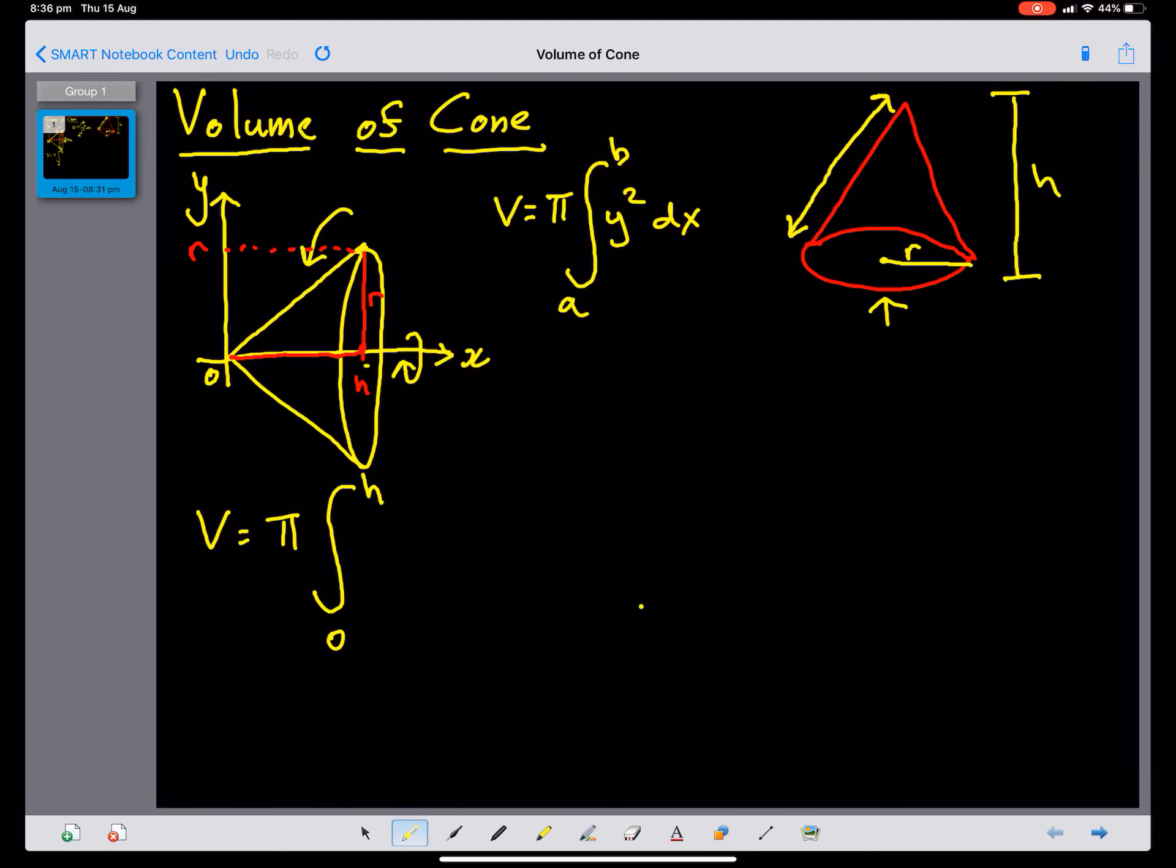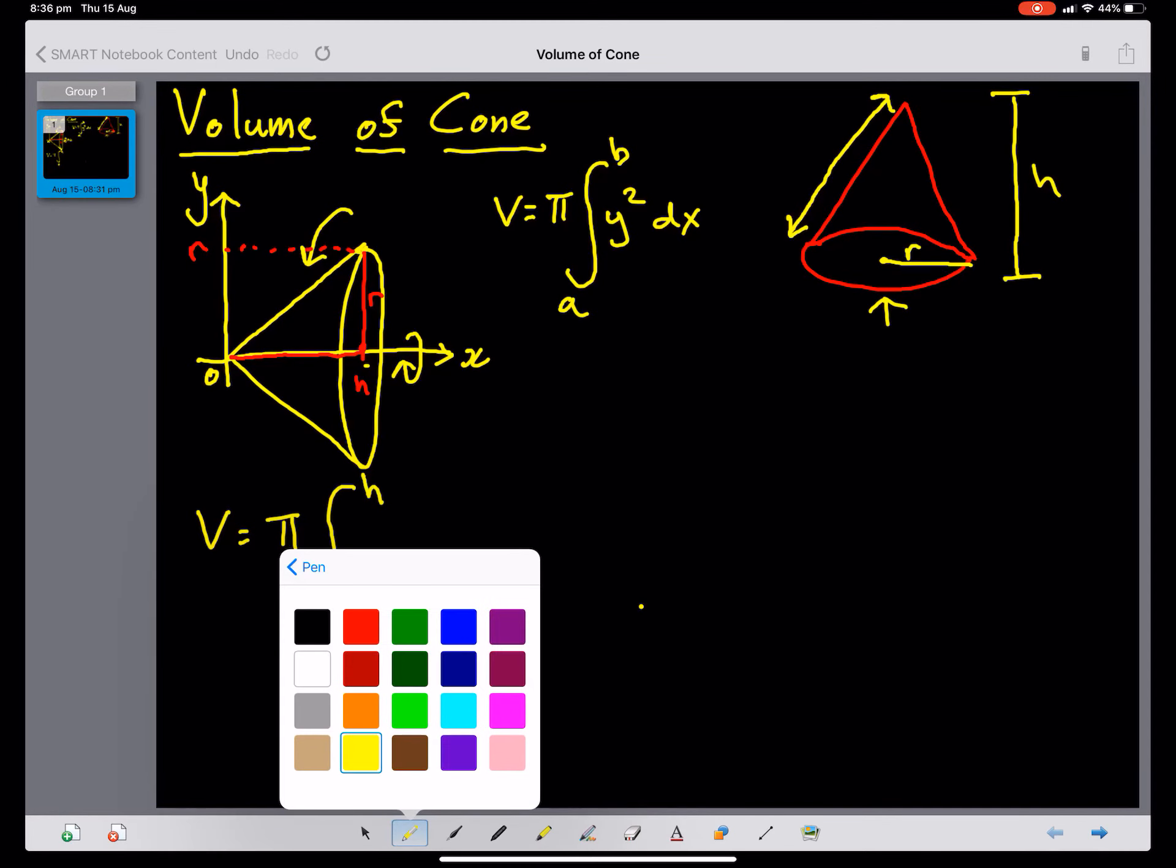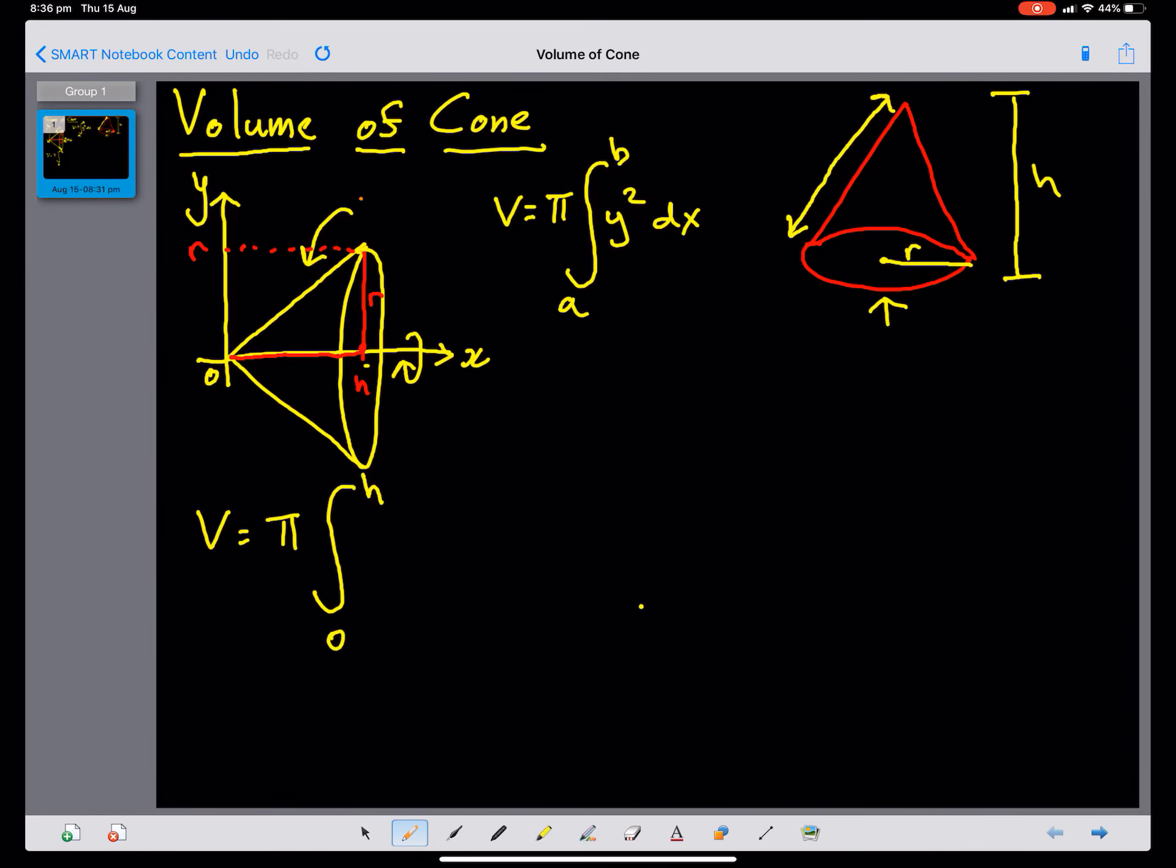And our equation of the straight line, let's write this, appear in orange, is going to be y. And if you remember, the gradient of a straight line is the change in x, the change in y values. The change in y values is just going to be R minus 0, which is just R, and h minus 0, which is just h, times x.